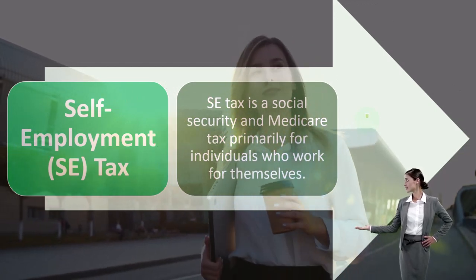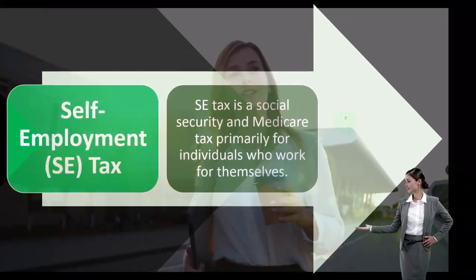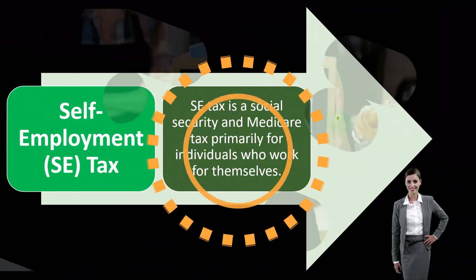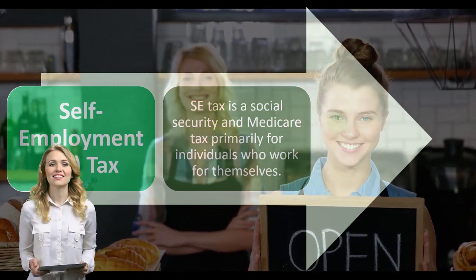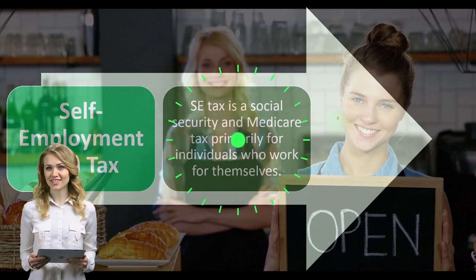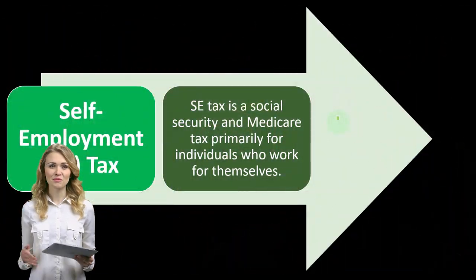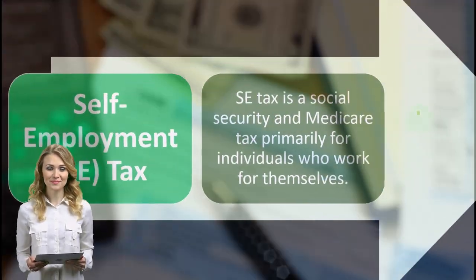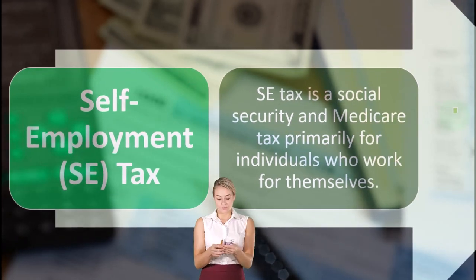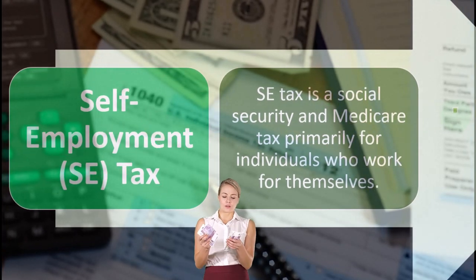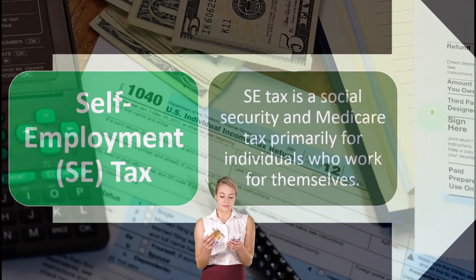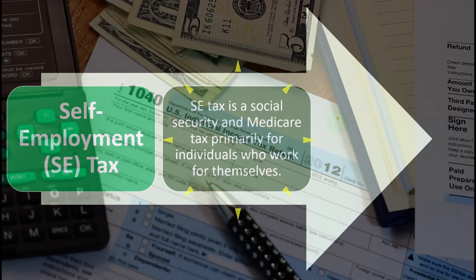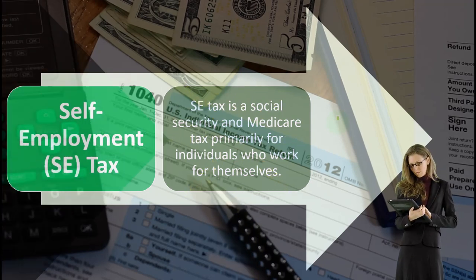That's one downside of being a sole proprietor or contractor versus being an employee — you pay both halves of the payroll tax. However, on the plus side, you can take deductions lowering your income, which also lowers your self-employment tax. That's the general overview. We have to report and add the SE tax to our Form 1040, something we're not used to doing if we previously had a W-2 situation.